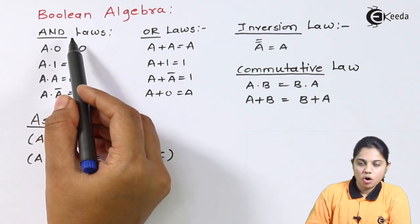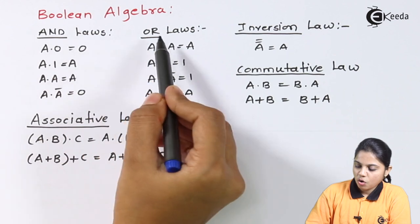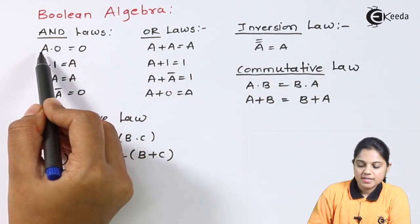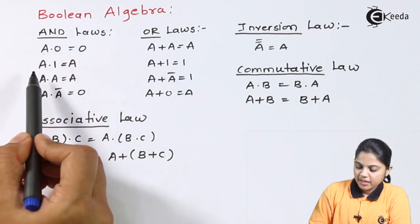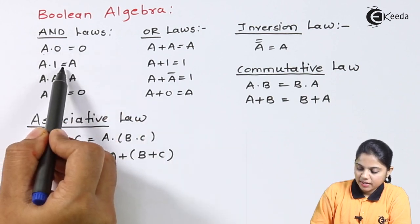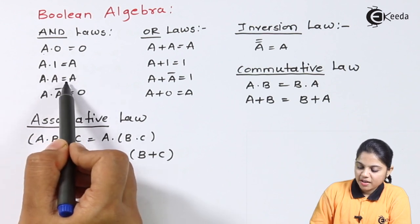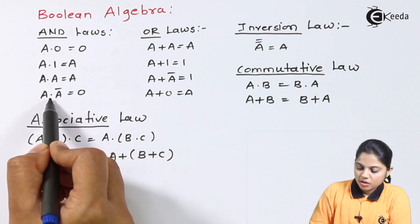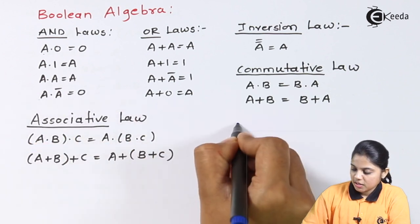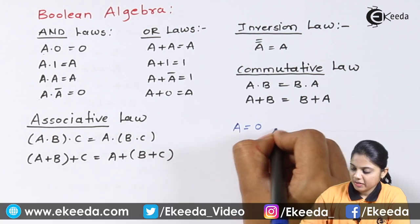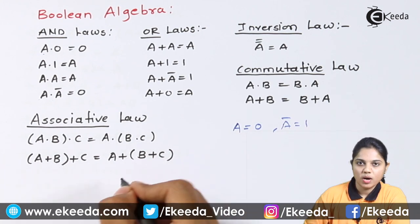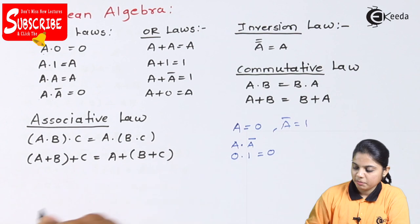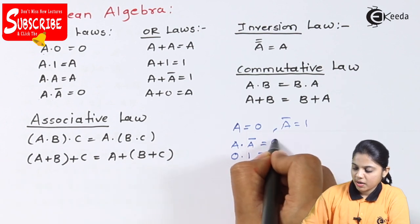So here we have some laws. Boolean algebra has AND laws, OR laws, and inversion law. The AND law says that A dot 0, if A is multiplied with 0, it becomes 0. If A is multiplied with 1, it gives you A. A dot A, as we have seen in the previous video, is equal to A. A dot A-bar: if A is equal to 0, then A-bar will become 1, so multiplying 0 and 1 gives output 0. So A dot A-bar is equal to 0.